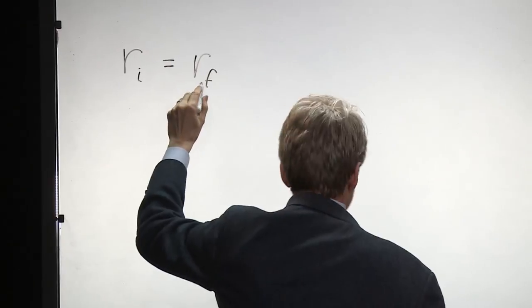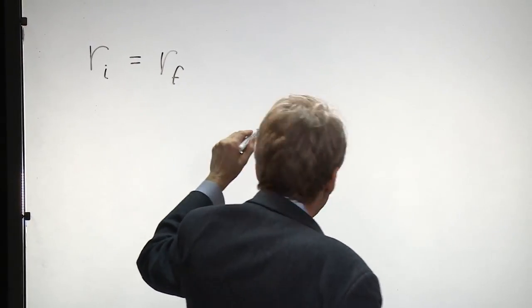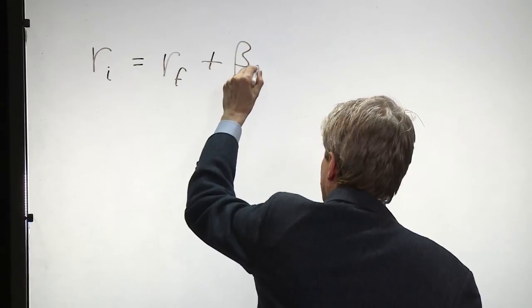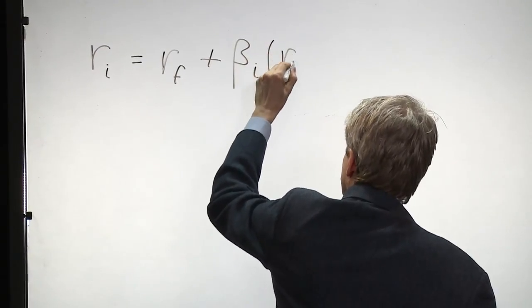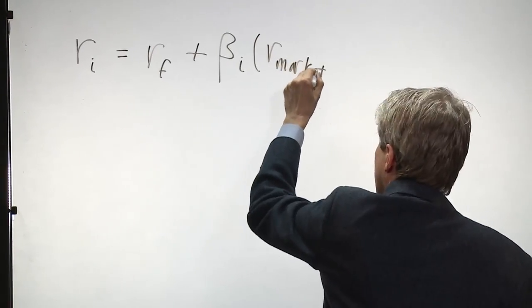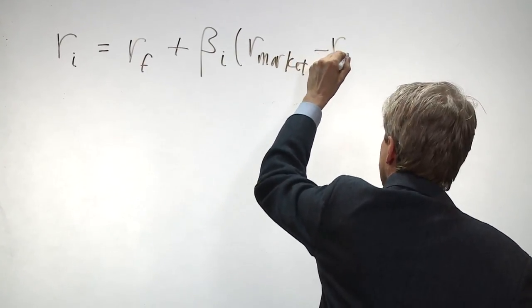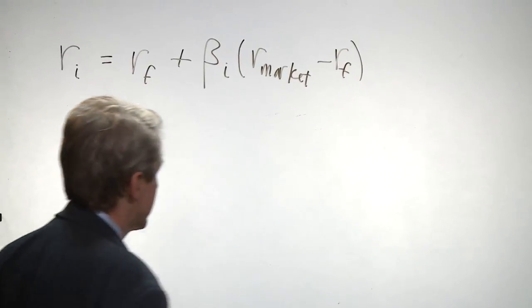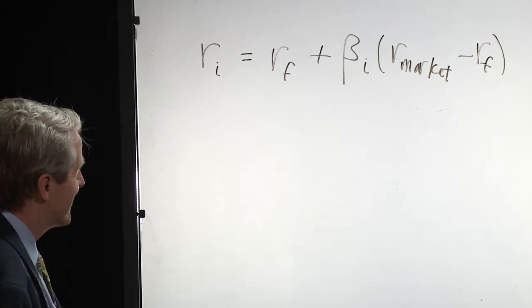—or actually, it's the same as the expected because it's known with certainty—plus the beta of the i-th asset times the expected return on the market minus the risk-free rate. So that is the most famous equation.